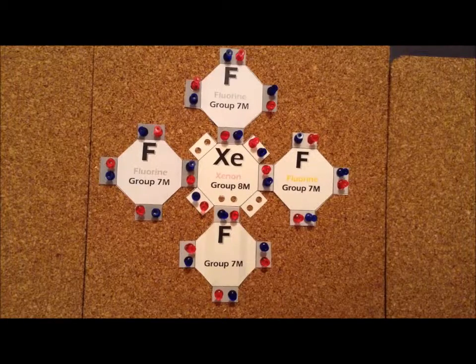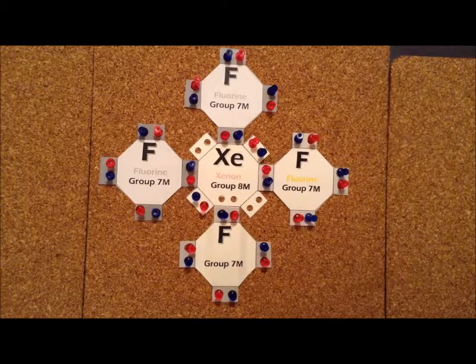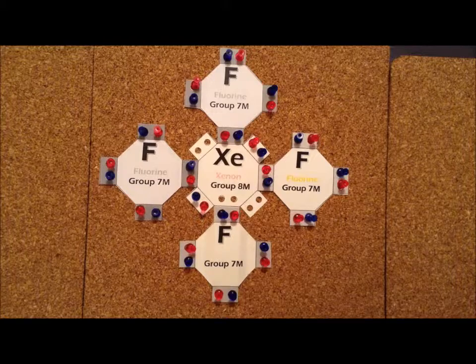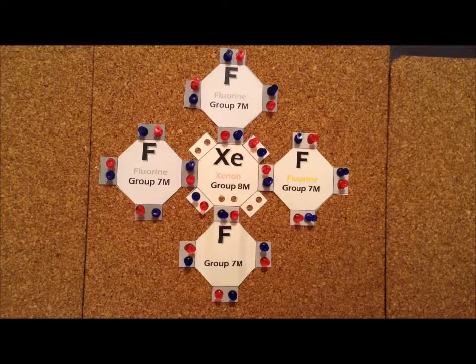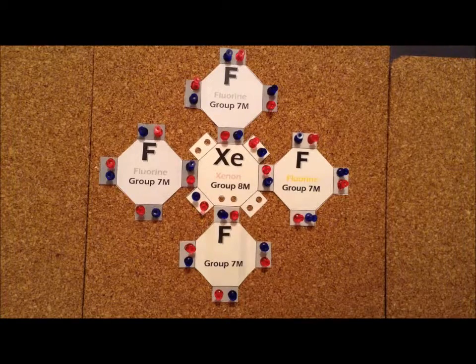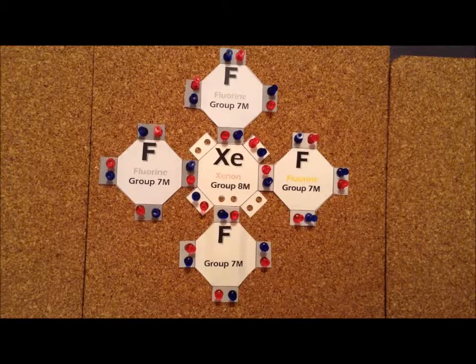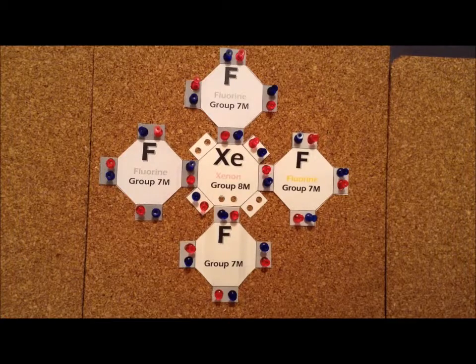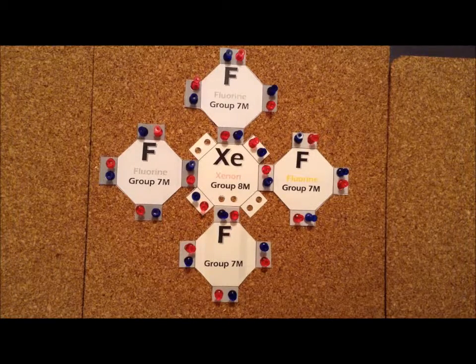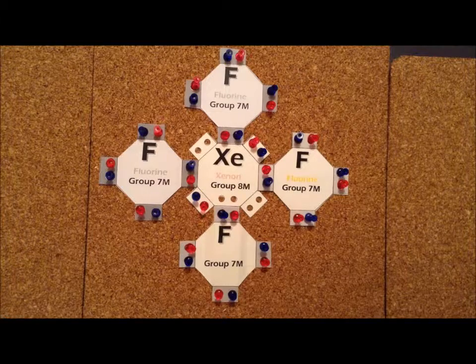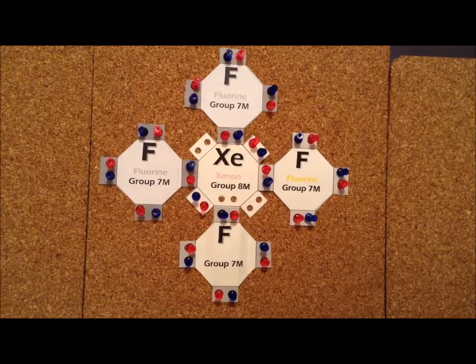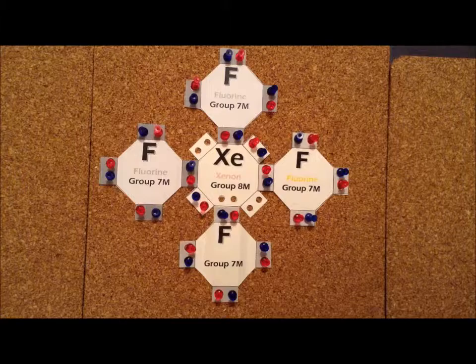Another xenon compound has the chemical formula XeF4, and that is called xenon tetrafluoride. For this particular compound, each of the fluorines contributes seven valence electrons. Since there's four of those, we get 28 electrons from the fluorines. The xenon contributes eight valence electrons, giving a total of 36 electrons for the entire compound.